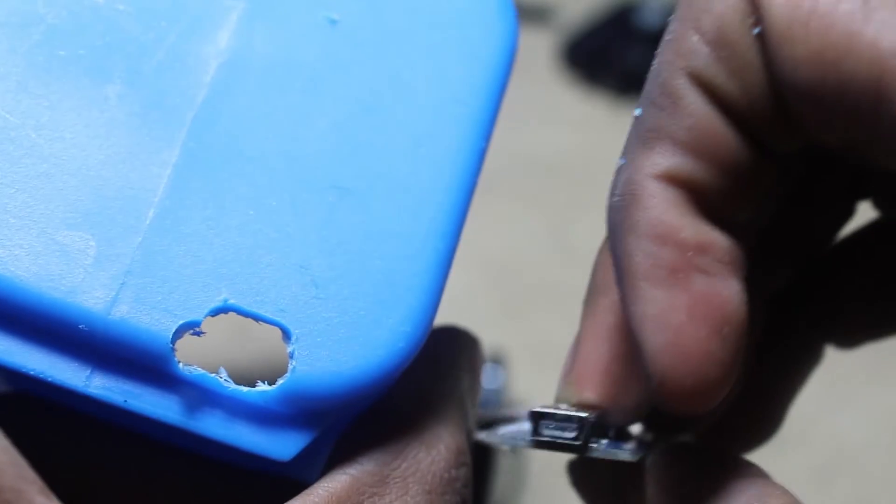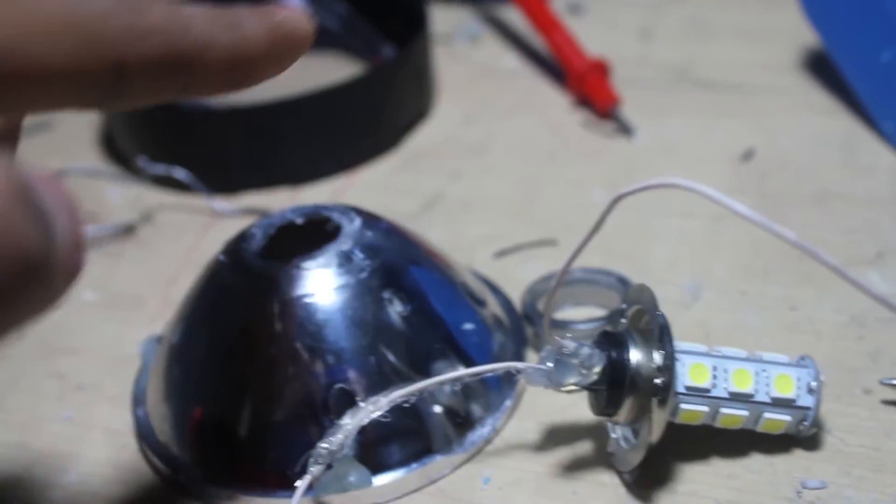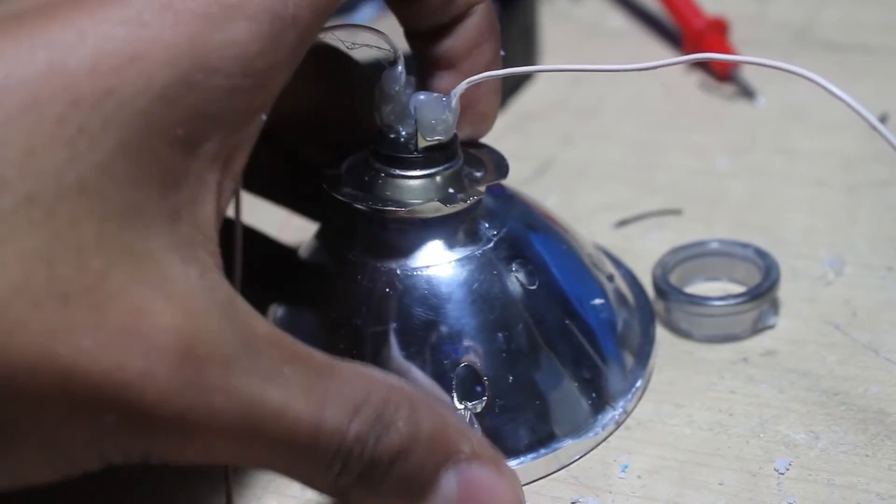Using my rotary tool, I marked and cut a hole in the side of the case for the charging module. The bulb was too big to fit in the pre-existing hole, so I cut the top off, which made it big enough to fit the LED bulb.